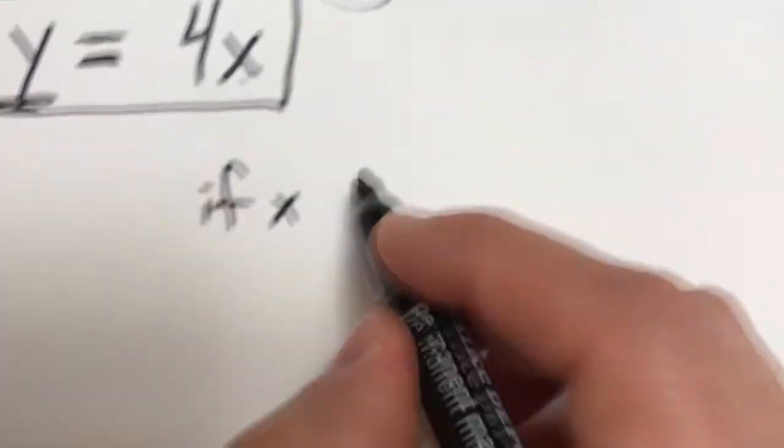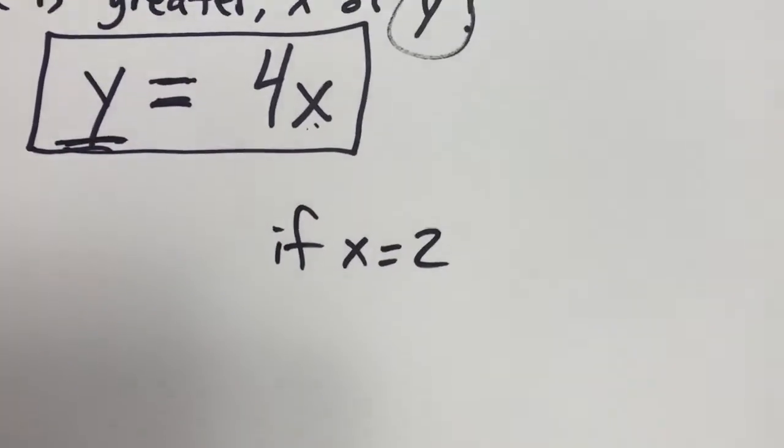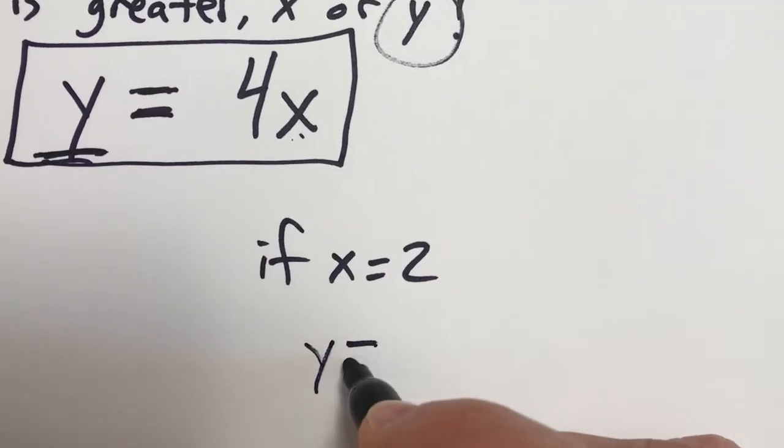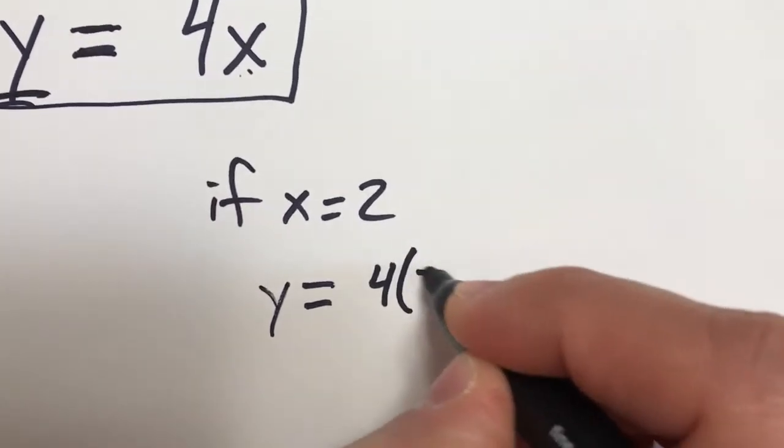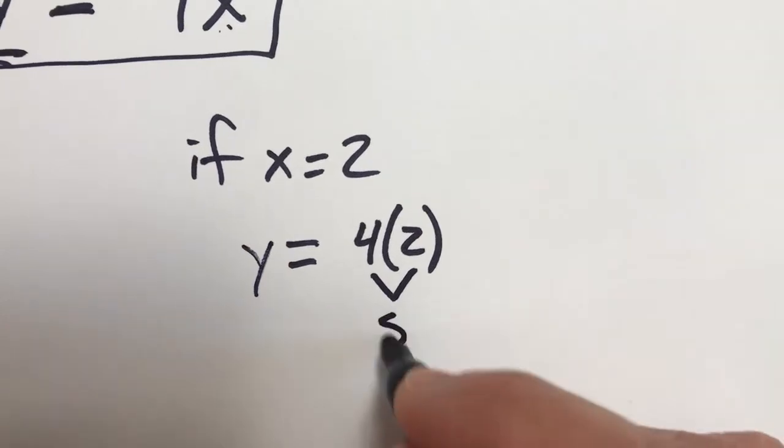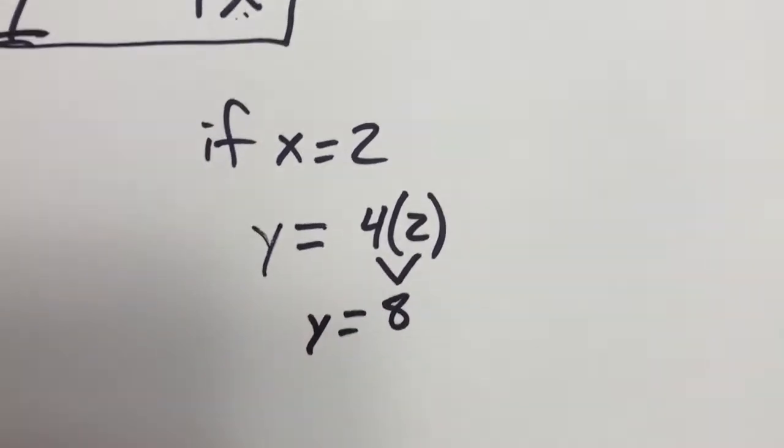if x equals 2, let's say. If x equals 2, so y equals 4 times 2. Well, I know that 4 times 2, of course, is 8. So y equals 8.